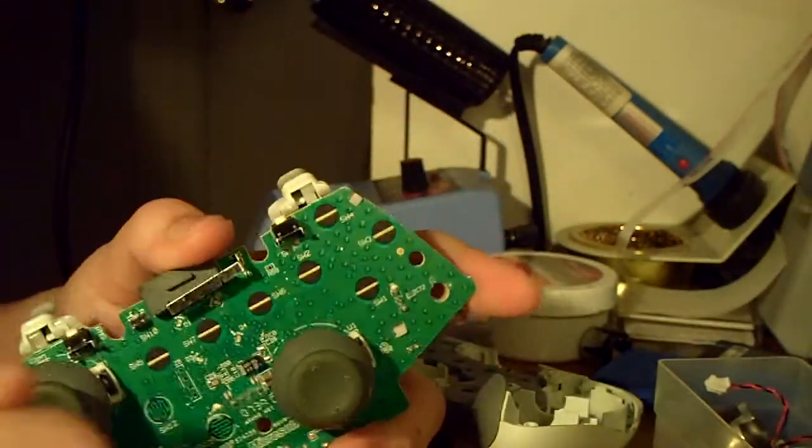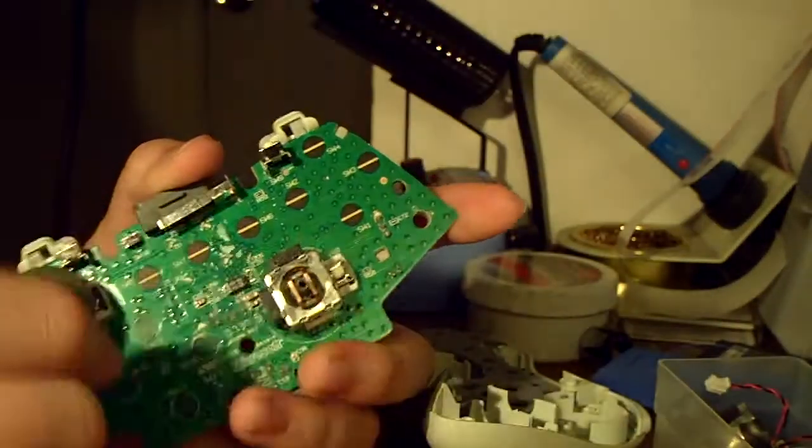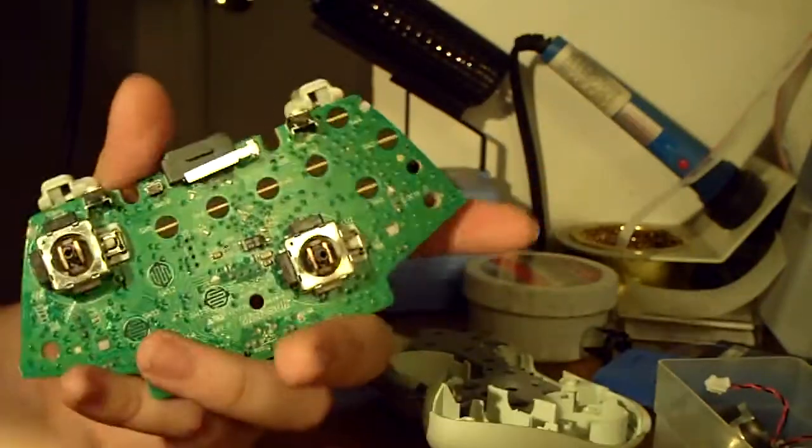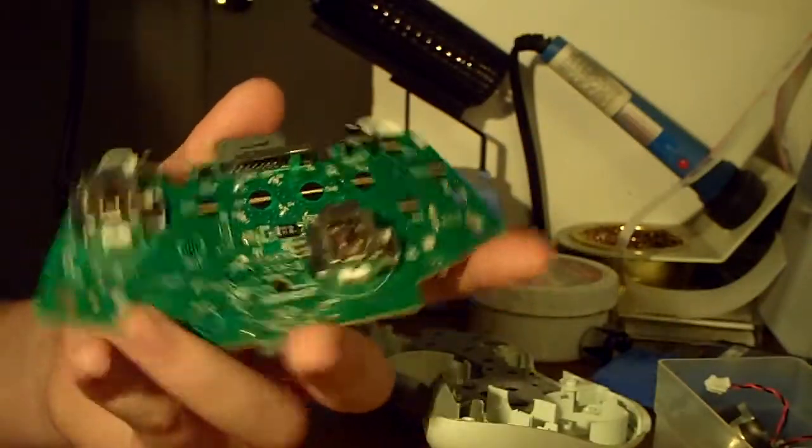And that's basically it. To take off the analog stick covers, just pull them forward. And yeah, that's everything.